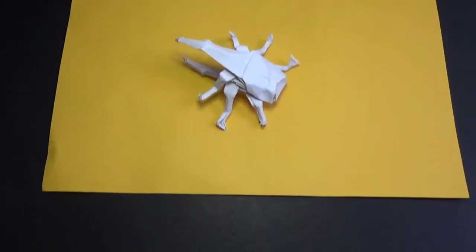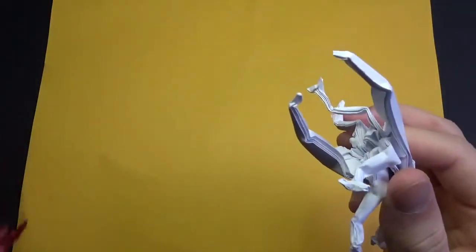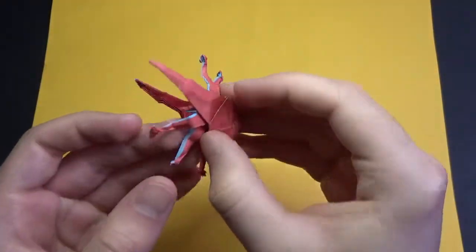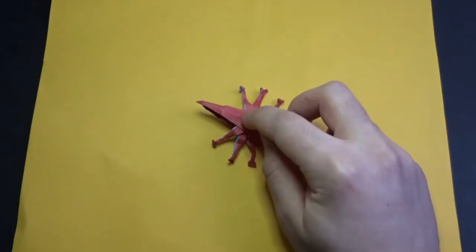So this is from a sheet of printer paper cut square, and here's another one I made right here. This is from a sheet of origami paper, a 6-inch square, and it also works. See? Just like that.